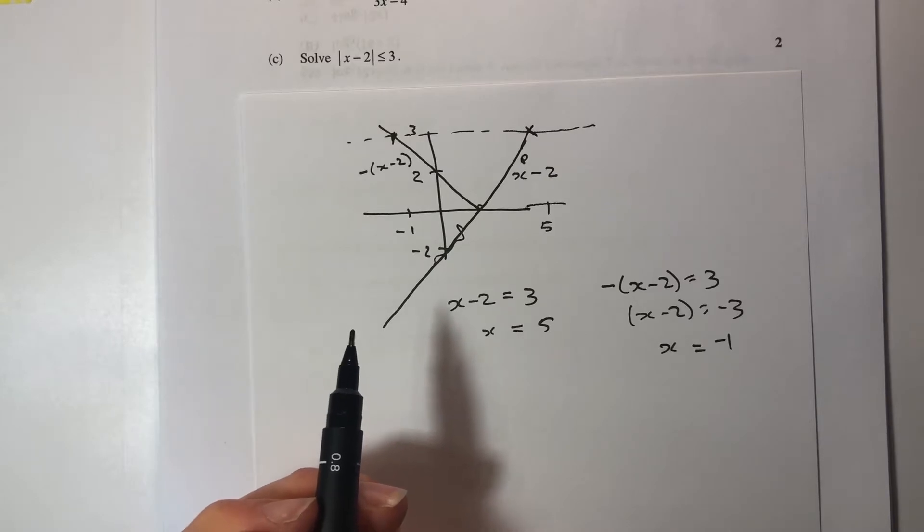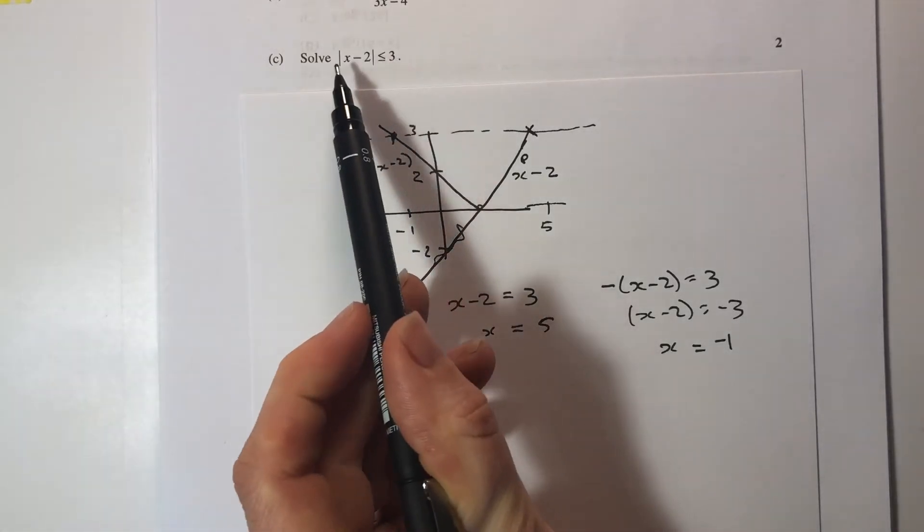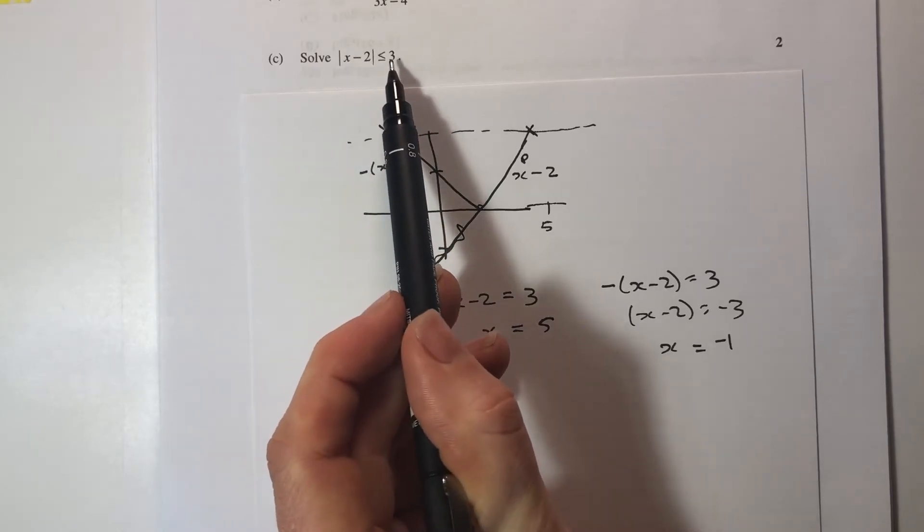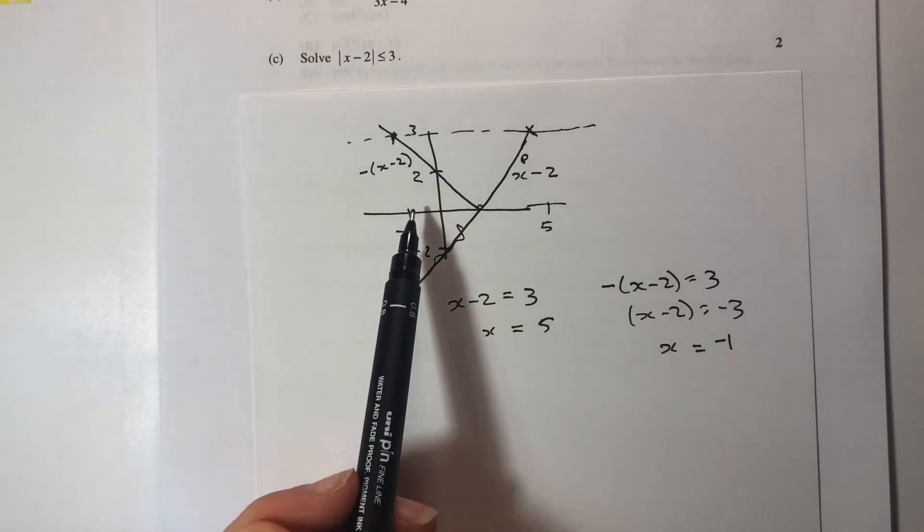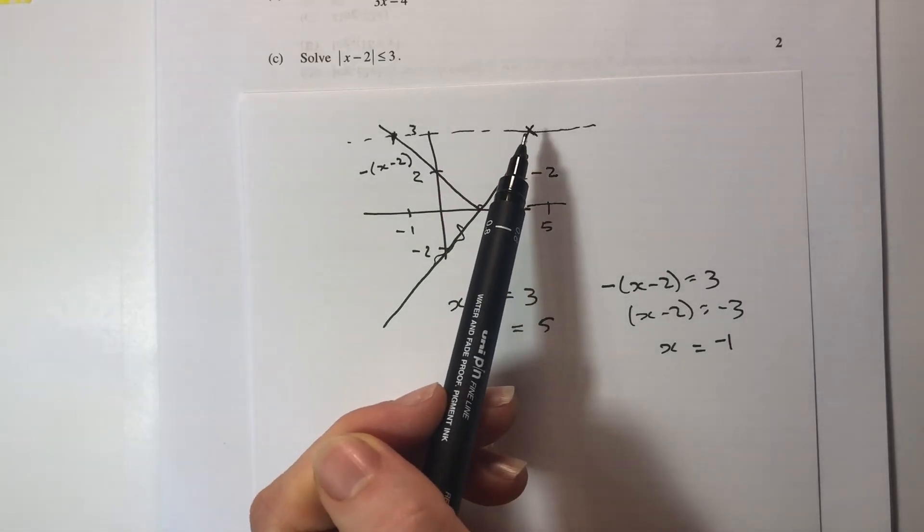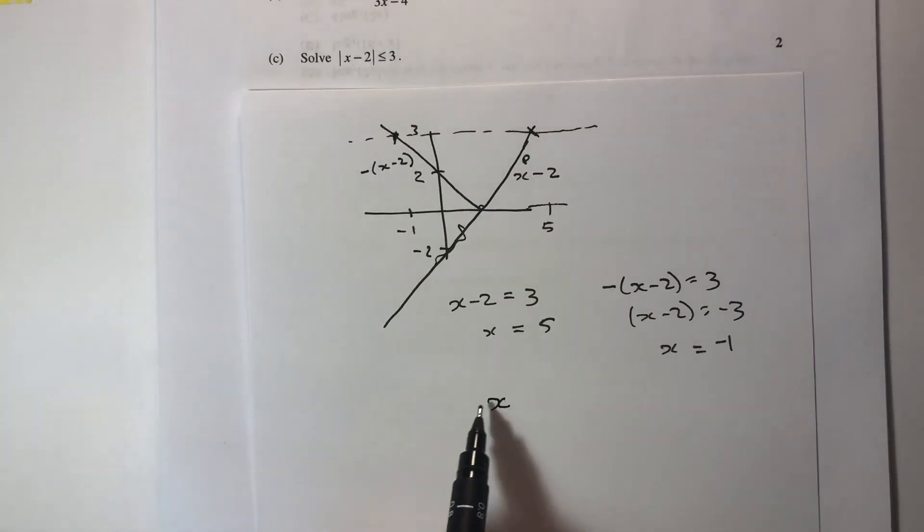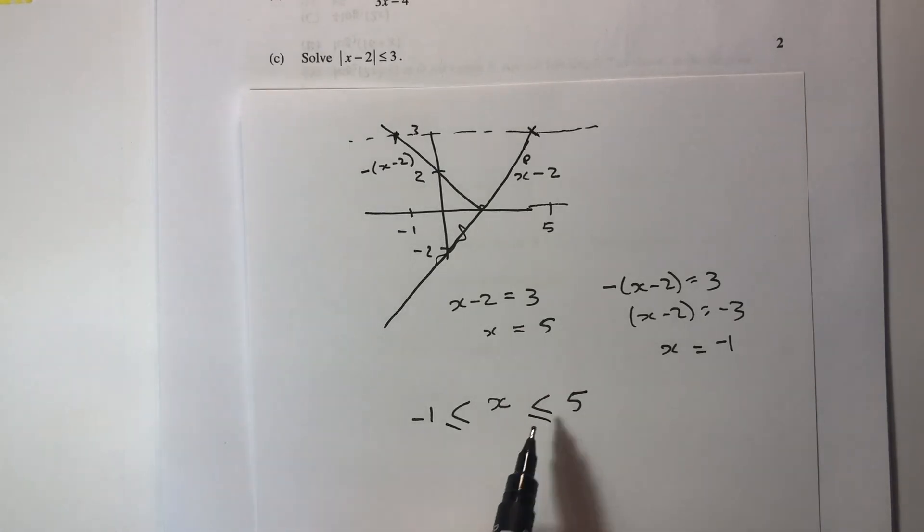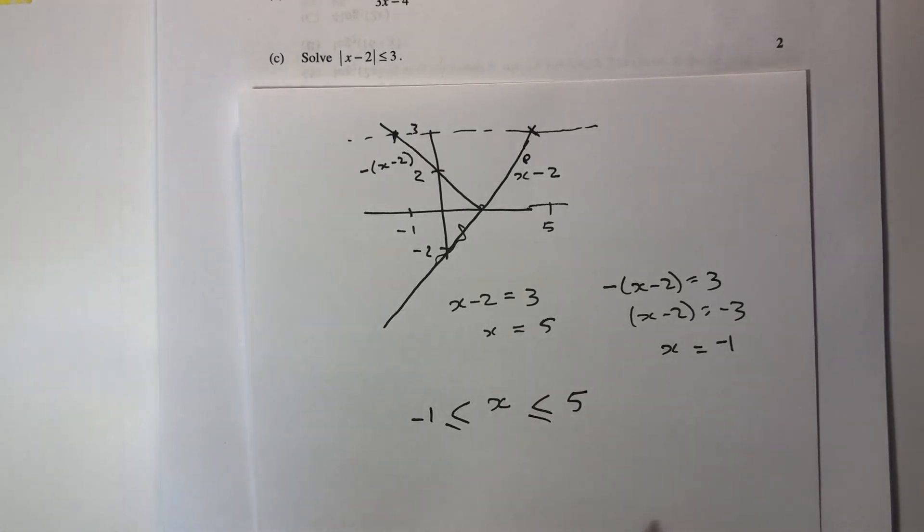Now the other thing about the diagram is that this is a less than, so that means I need my absolute value line to be underneath my 3 line, which means from the minus 1 through to the 5, I can see that my v is under rather than above. So my final answer is going to be between minus 1 and 5. And because it was inclusive in the question, I'm going to use inclusive in my answer.